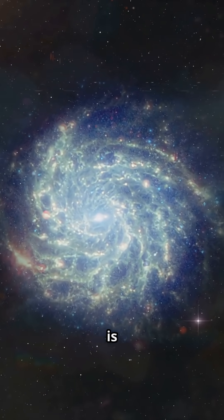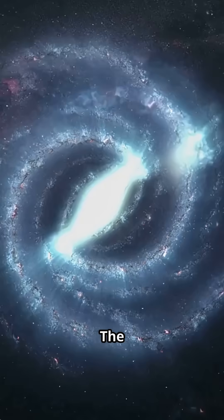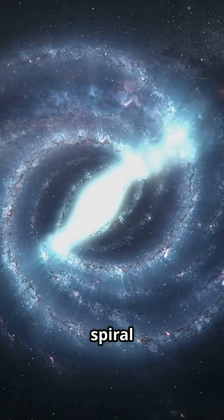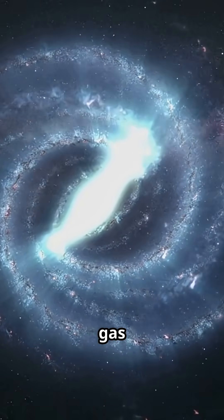Next up, spiral galaxies. This is our galaxy type, the Milky Way. The ones with a bright central bulge and beautiful spiral arms. They are full of young blue stars and plenty of gas and dust.